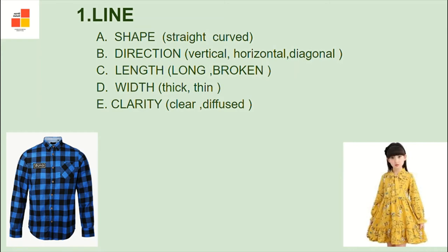Width of line could be thick or thin. Thick lines add width to a figure, while thin lines add a slimming effect. Next, clarity — clear and diffused lines. Some lines in the garments are apparent while others are diffused in the design. Clarity of princess lines used for stitching kameezes helps the person appear slimmer.